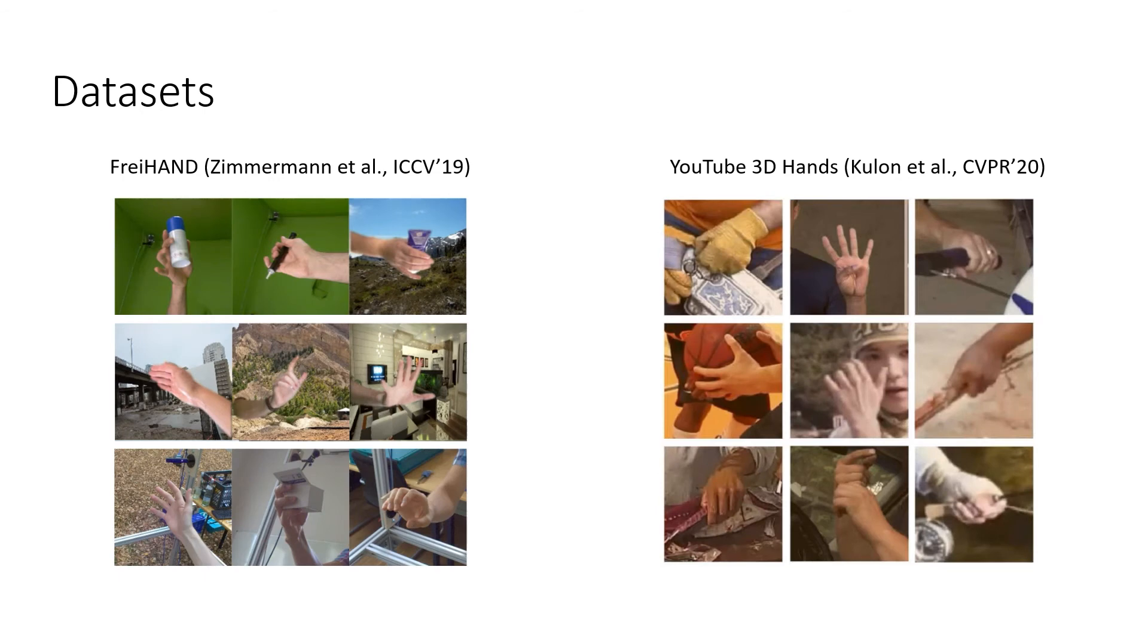Here, the labeled and target dataset is FreiHAND, a fully labeled dataset which is shown on the left. The unlabeled dataset consists of YouTube 3D Hands, which is shown on the right. We note that this dataset contains automatically annotated labels obtained via OpenPose and MANO-fitting, which we will use for the evaluation of the cross-dataset setting.